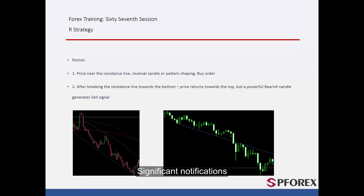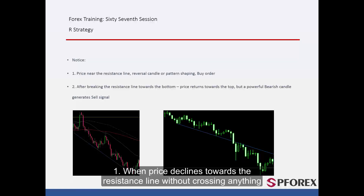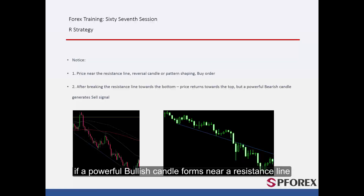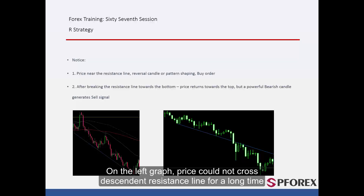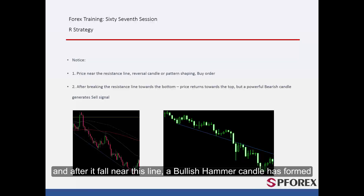Significant Notifications: When price declines towards the resistance line without crossing anything, if a powerful bullish candle forms near the resistance line, then a powerful and reliable buy signal is generated after price goes higher than that bullish candle. On the left graph, price could not cross the descendant resistance line for a long time, and after it fell near this line, a bullish hammer candle formed. Thus, a trader could place a buy order above the high price of the given candle.